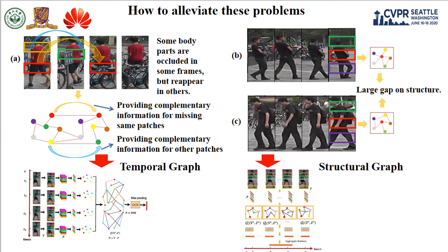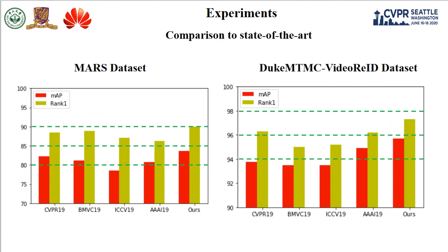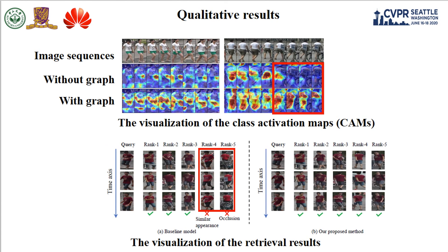For the similar visual feature problem, we can see that persons in figures B and C are very visually similar, but their structural information of the body is obviously different. So we design a structural graph module to capture the structural information.